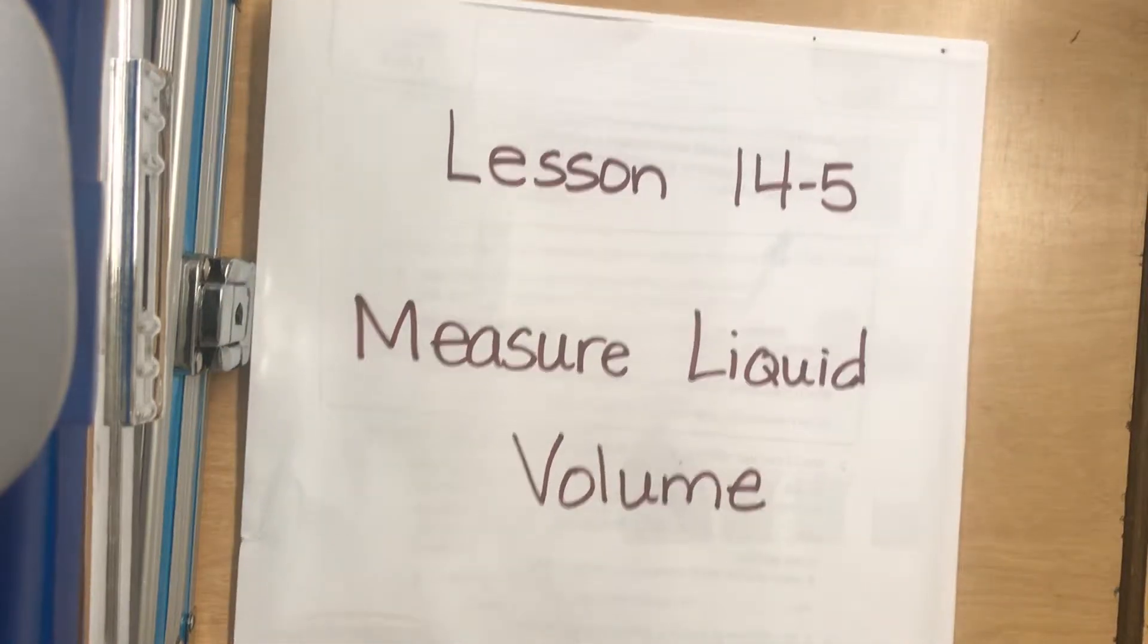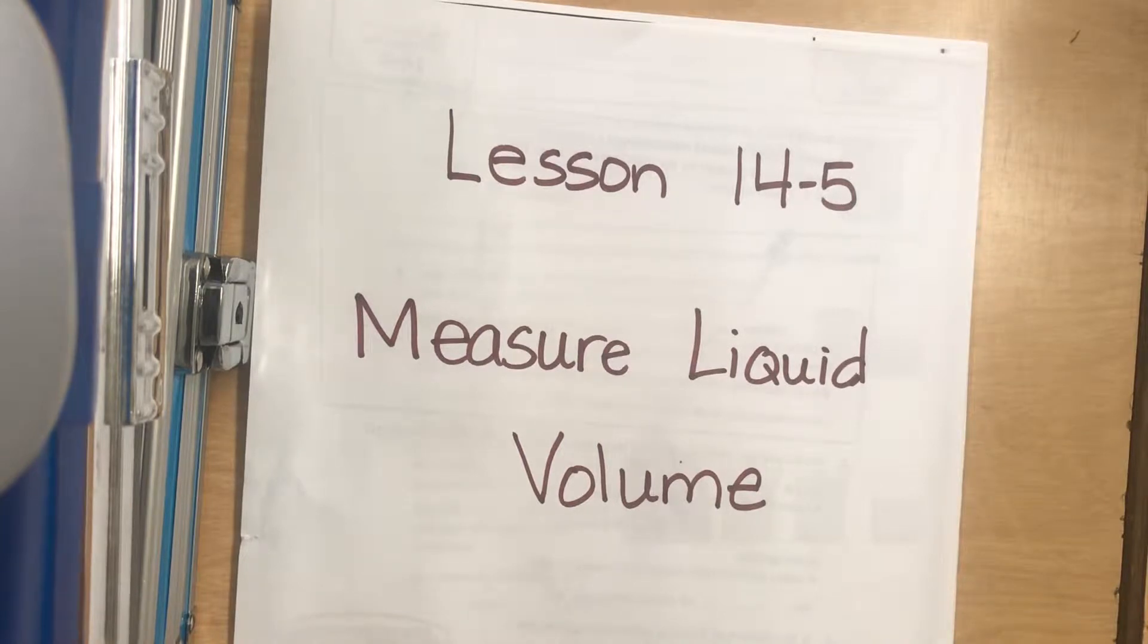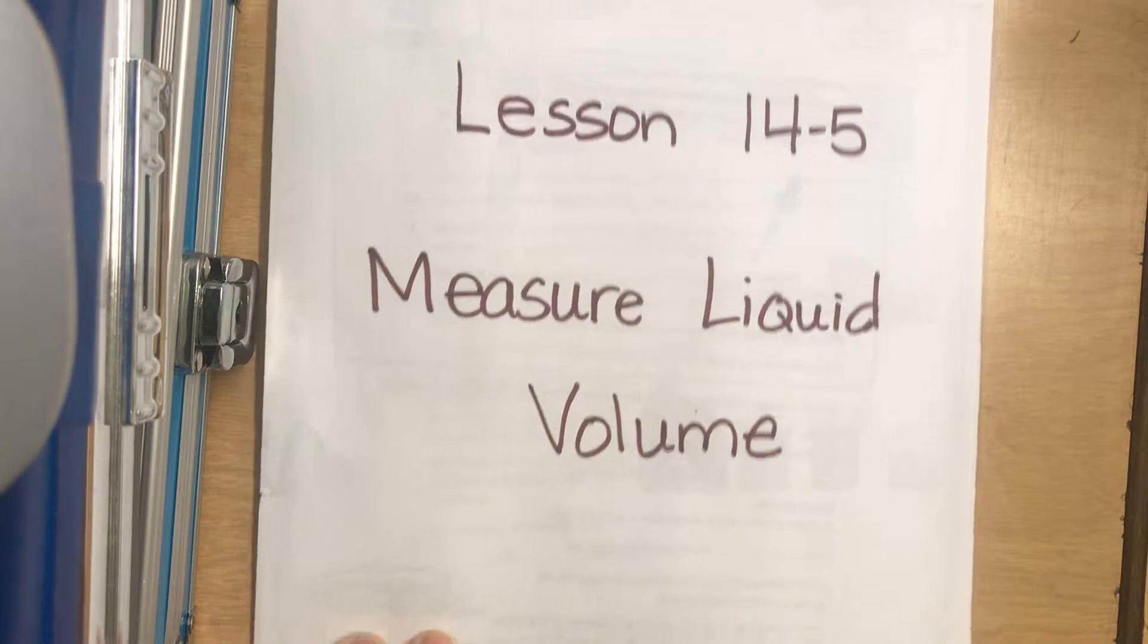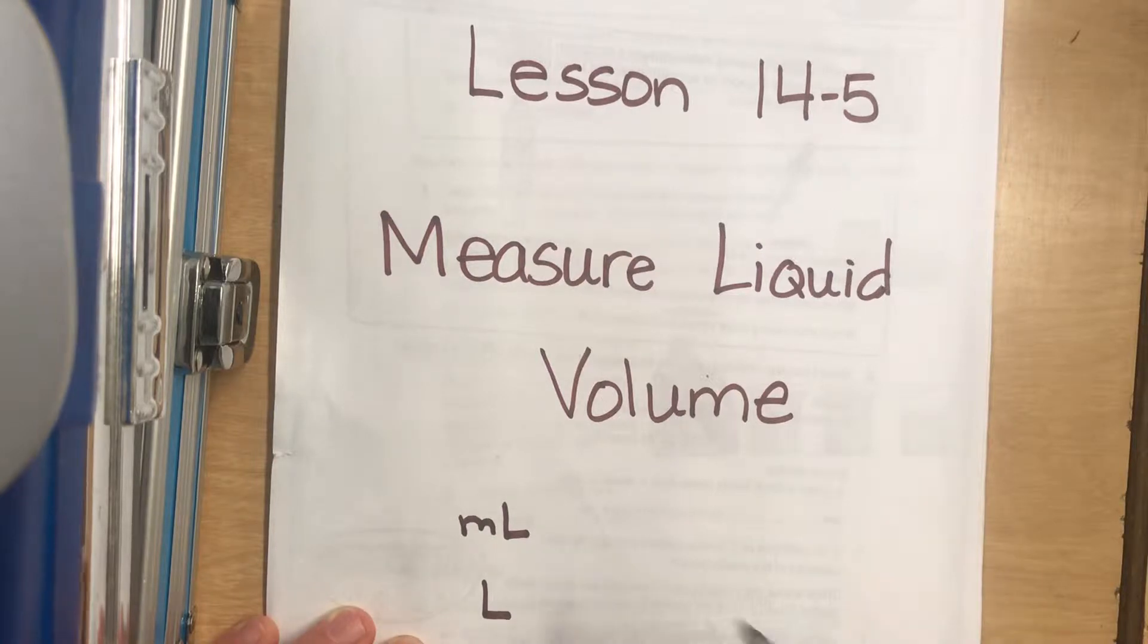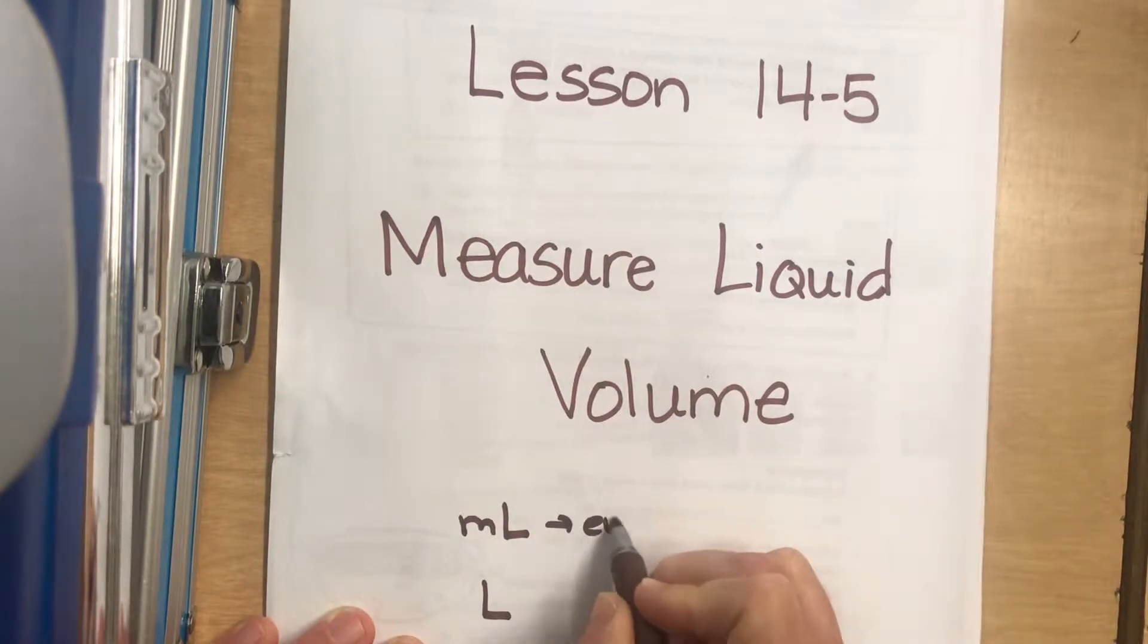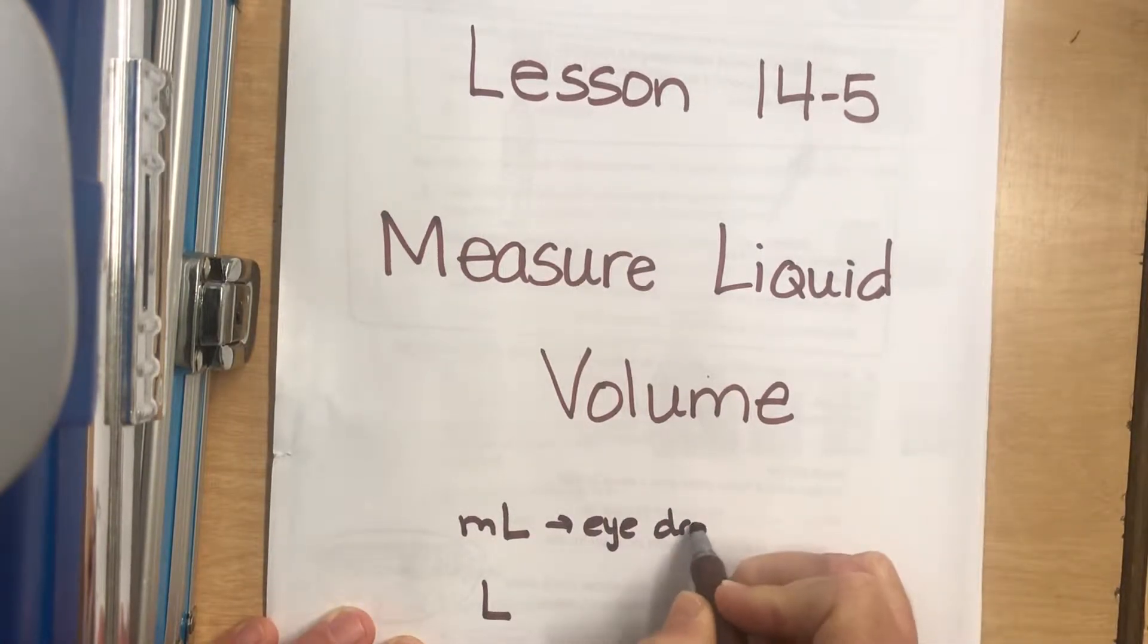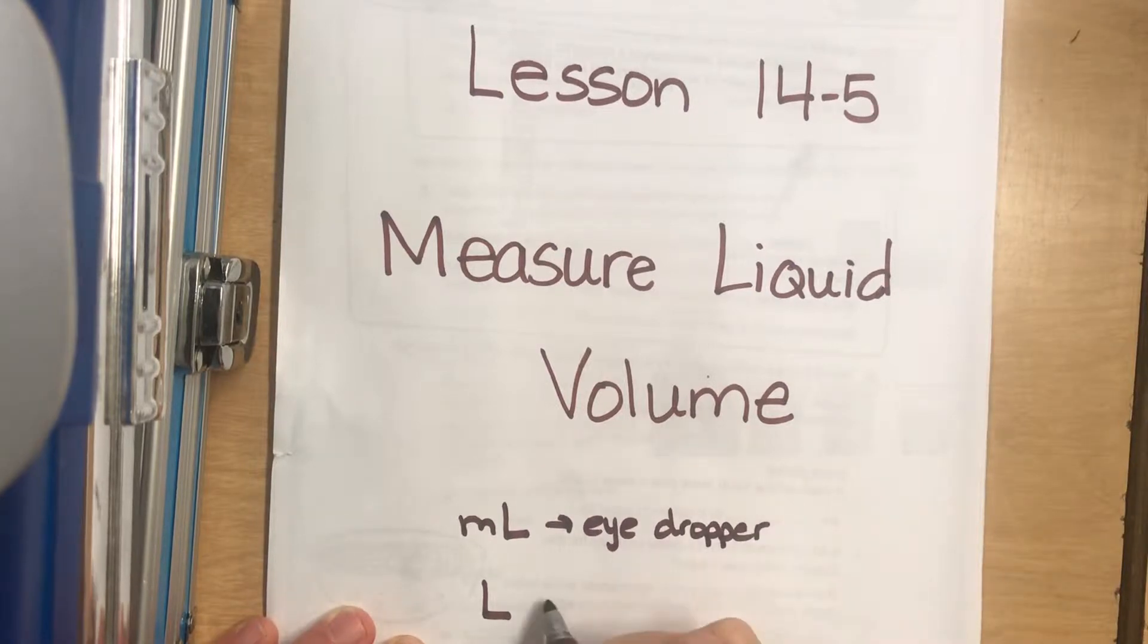We're going to do lesson 14-5: measuring liquid volume. We already learned about estimating liquid volume using milliliters and liters. Milliliters are like an eyedropper, and a liter is like a large water bottle.